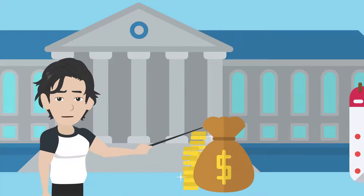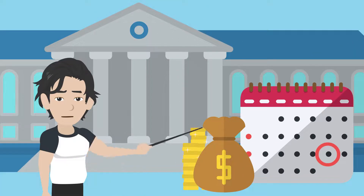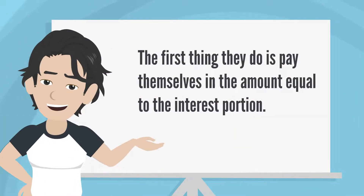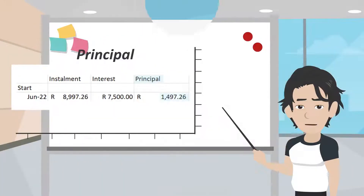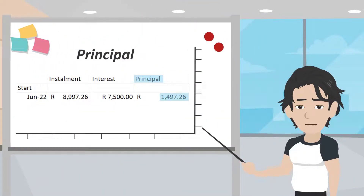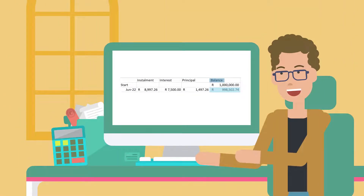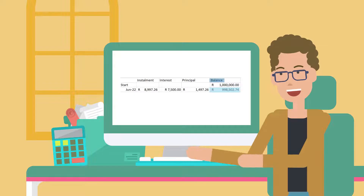When your lender receives your full amortized payment, the first thing they do is pay themselves the amount equal to the interest portion. Then your principal contribution is what remains after the lender has paid themselves the interest portion, as you can see in the table below. After that, the lender will then reduce your loan balance by your leftover principal payment, as you can see in the table below.